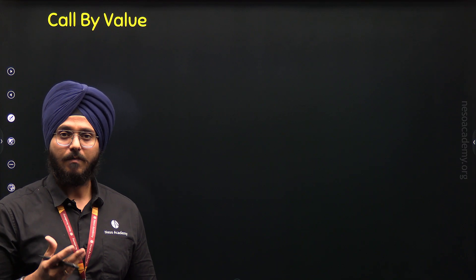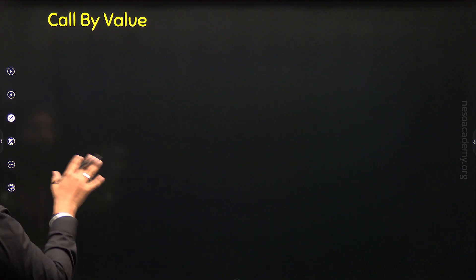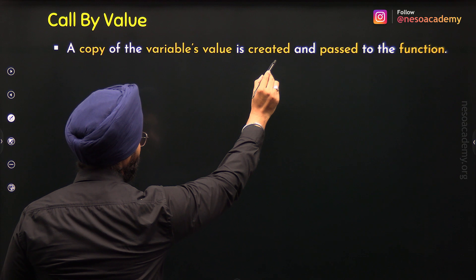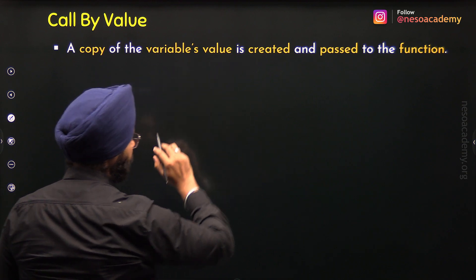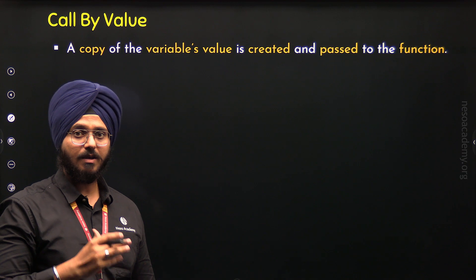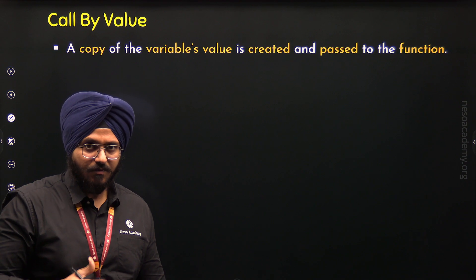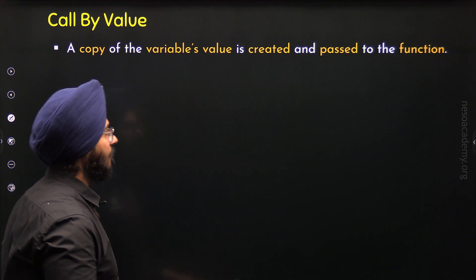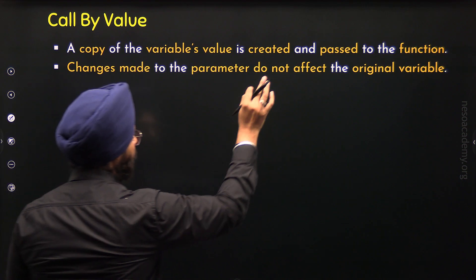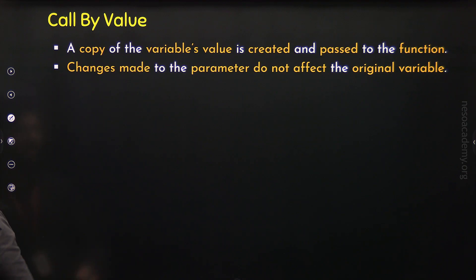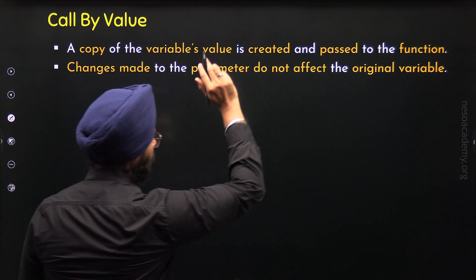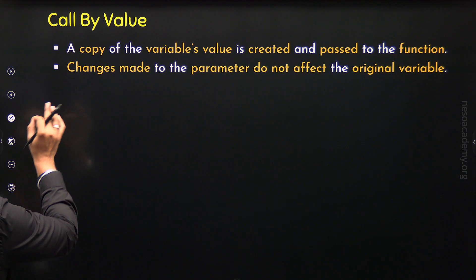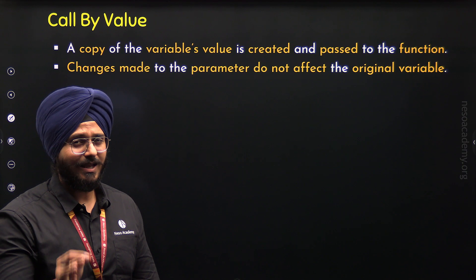What is call by value? Call by value means calling a function by value. In this type of function call, a copy of the variable's value is created and it is passed to the function. If we make any changes to the parameter, those changes will not reflect in the original variable. Changes made to the parameter do not affect the original variable passed as the argument. If this concept is not clear, I will make it clear with the help of an example program.